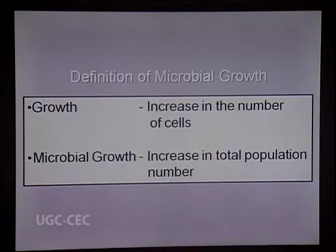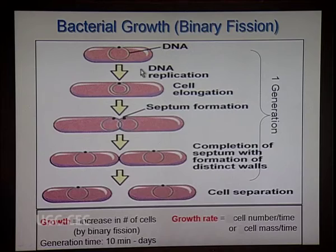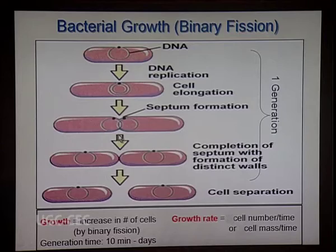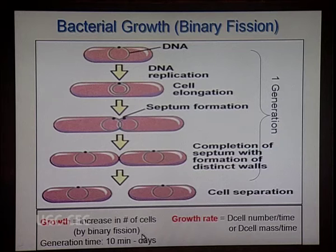Though microbial cells are very small in size, we ascertain microbial growth by the increase in the total population number of cells. The microbes utilize certain asexual processes like binary fission. In binary fission, first the DNA gets replicated. The replicated DNA then gets separated into two cells with the help of septum formation. As a result, a single cell divides to form two progeny cells, which constitutes one generation. Bacterial growth can be defined as an increase in the number of cells via binary fission.